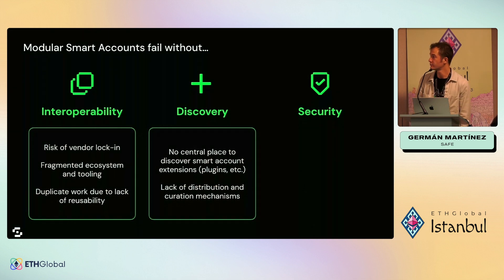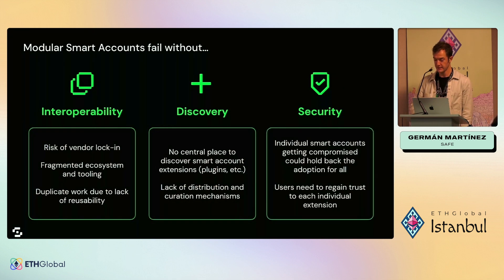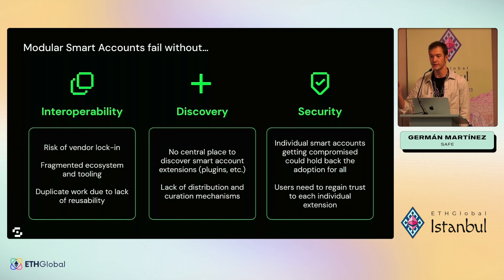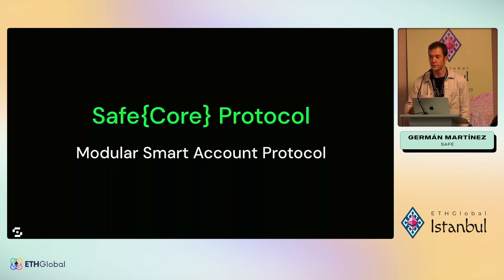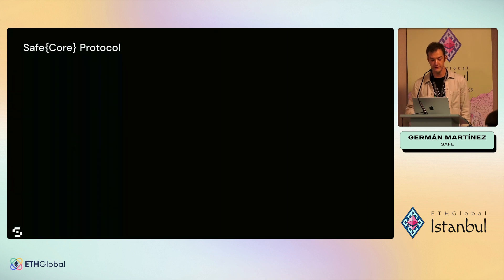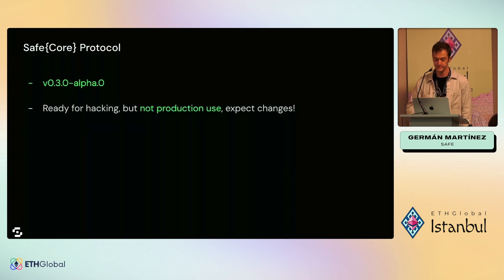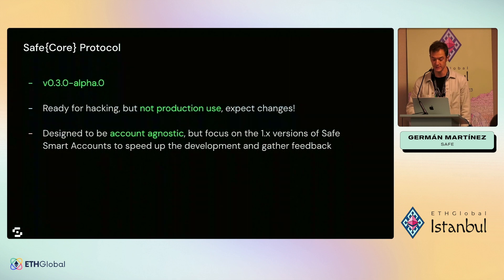We will tell you how we try to solve this. And security, because the more extensions we add, the more different parties we need to trust as users. So the SAFE Core Protocol tries to approach these three things. Currently it's in alpha version — it's ready for hacking but not for production use yet.